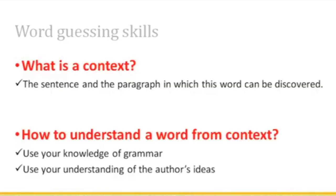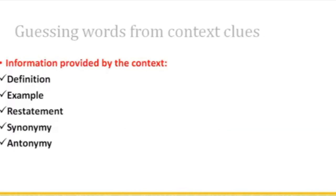We'll focus on context. A context is the sentence and the paragraph in which a word can be discovered. To understand a word from context, there are two important skills to follow. First, use your knowledge of grammar — grammar is very important to understand words from context. Second, use your understanding of the author's ideas. Using words from context clues gives you the following information.